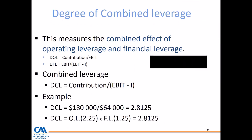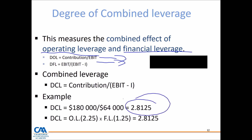Combining operating leverage and financial leverage gives us the degree of combined leverage. Operating leverage equals contribution divided by EBIT; financial leverage equals EBIT divided by (EBIT minus interest). Therefore, combined leverage equals contribution divided by (EBIT minus interest). In the example, the combined leverage works out to 2.8125.